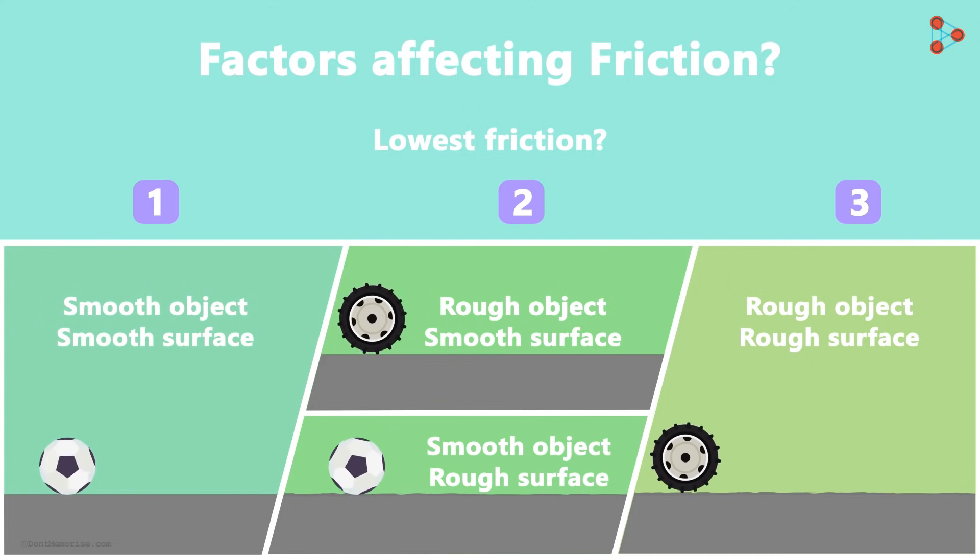If we just look at these three situations, we can say that the force of friction increases as we go towards the right. So can you tell me the first factor on which the force of friction depends? Yes, it depends on the nature of the surface on which the object moves and the nature of the surface of the object. It depends on the smoothness or roughness of the two surfaces which are in contact with each other.